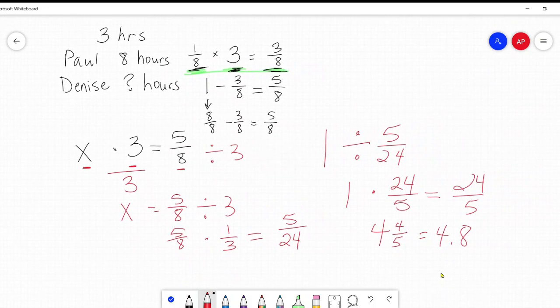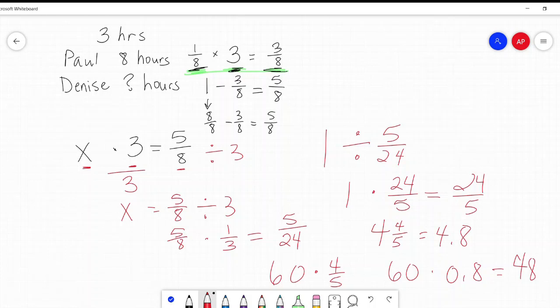Well, 0.8, you can put this in your calculator, 60 times 0.8, because this is part of an hour or part of 60 minutes. Also, you can say 60 times four fifths, both of those work. And four fifths of 60 is 48. So grand answer, Denise can do it in four hours and 48 minutes.